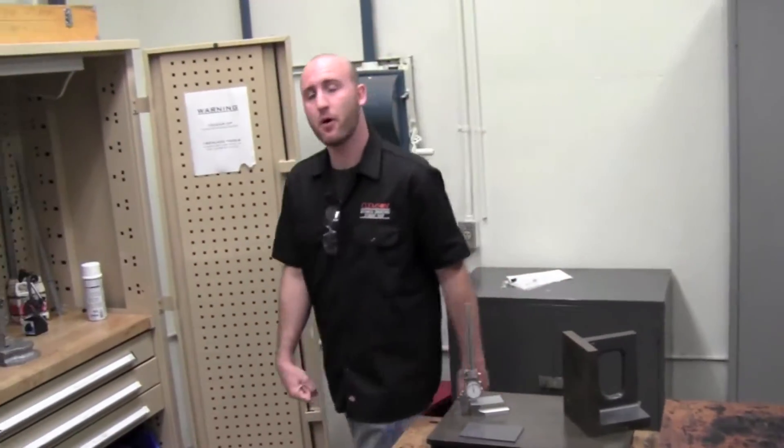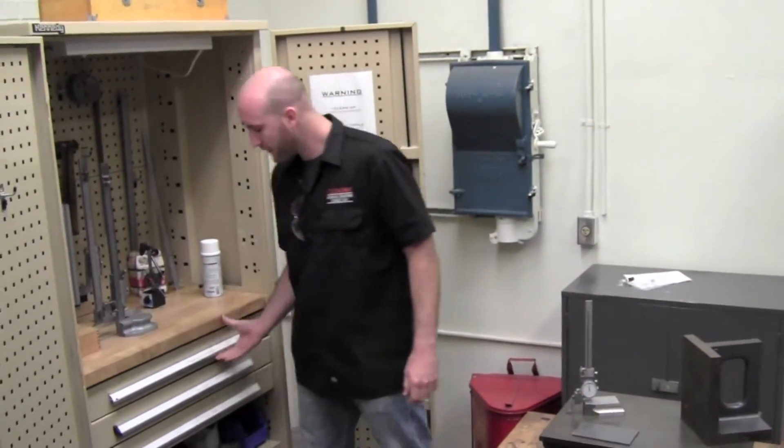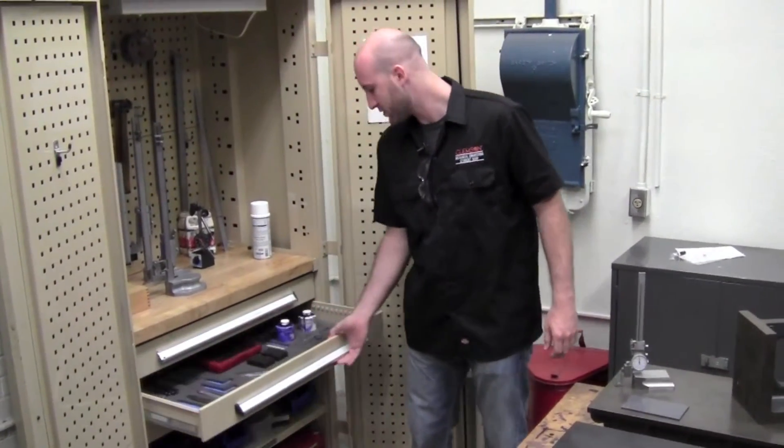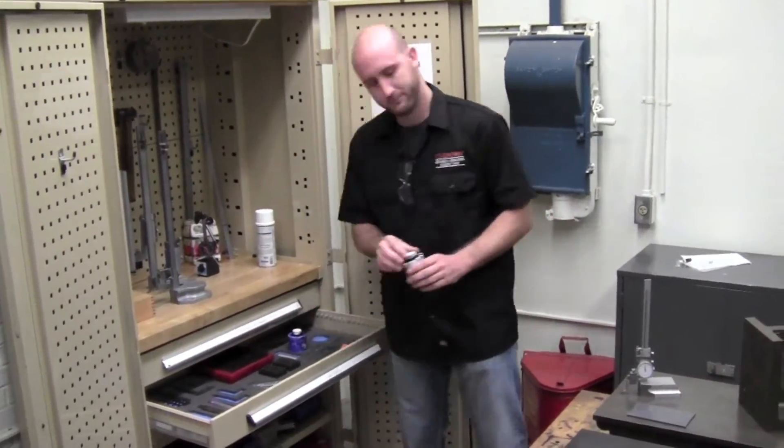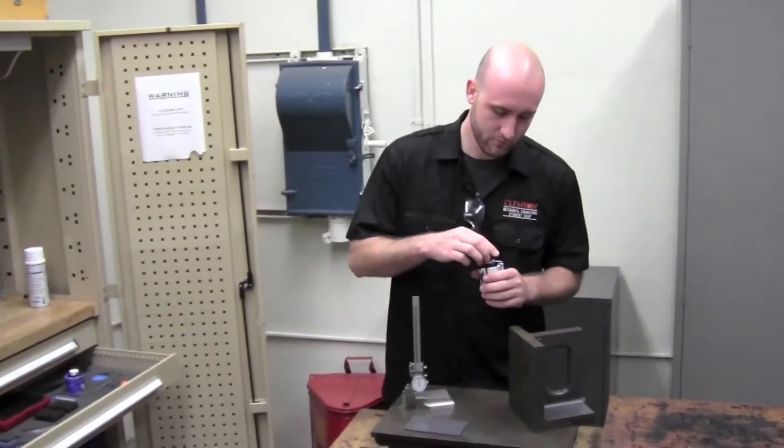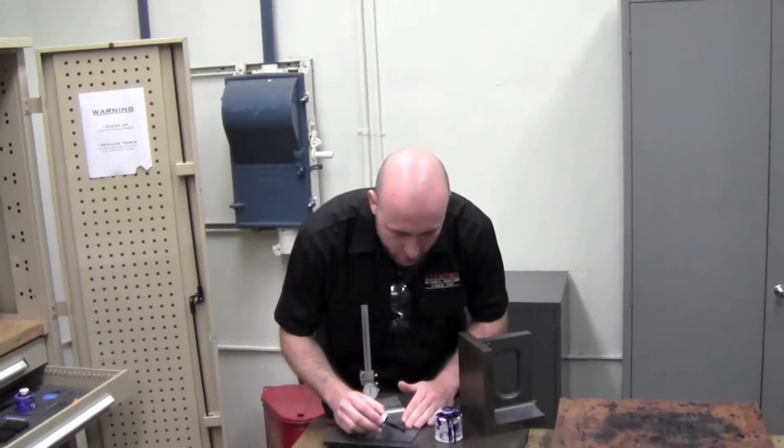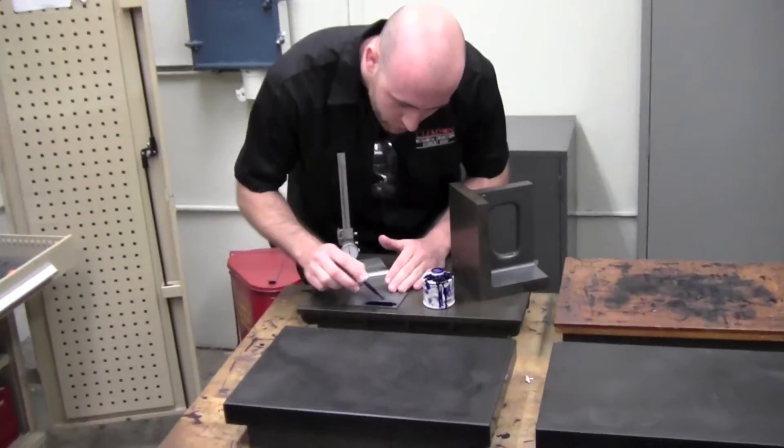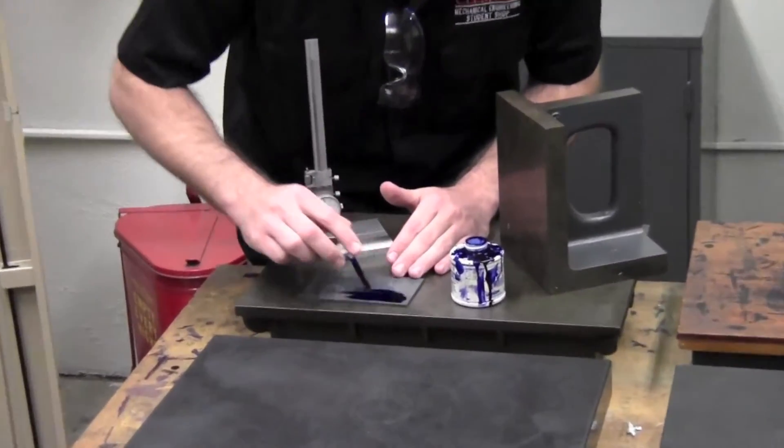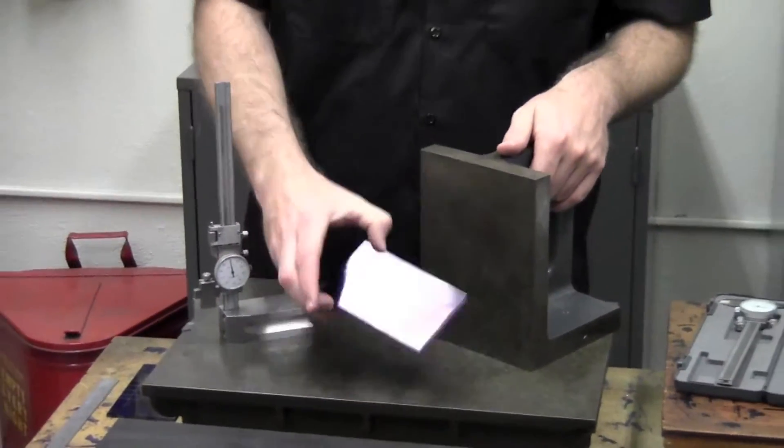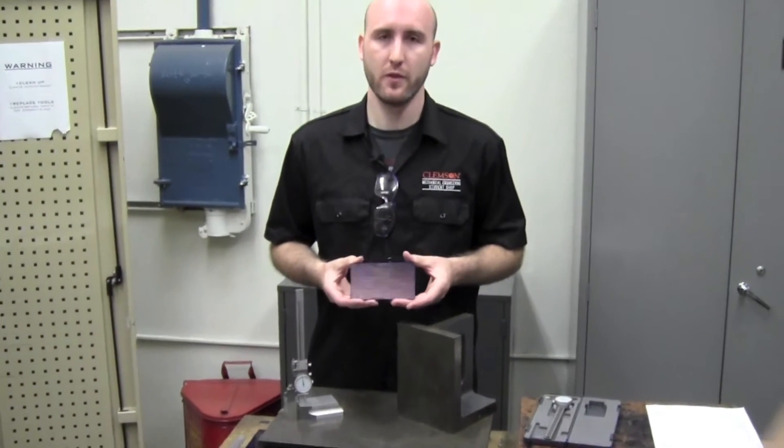First thing we're going to do is cover our part with layout fluid. You can find the layout fluid in the second drawer under layout tools. You don't need too much. When you're finished coating your part with layout dye, it should look something like this.